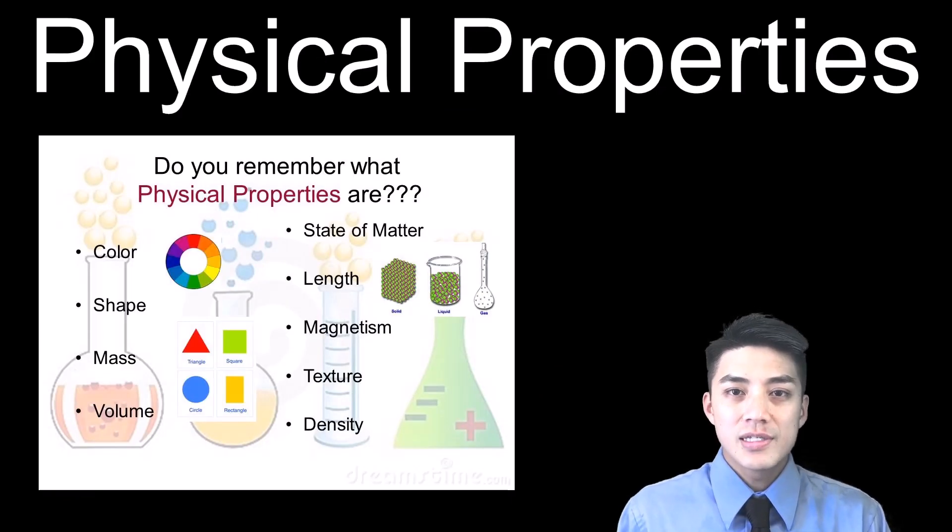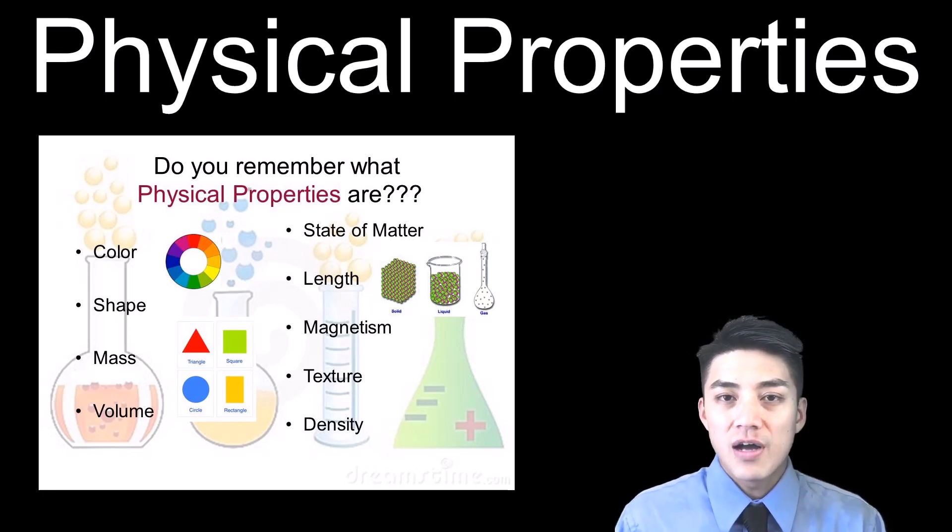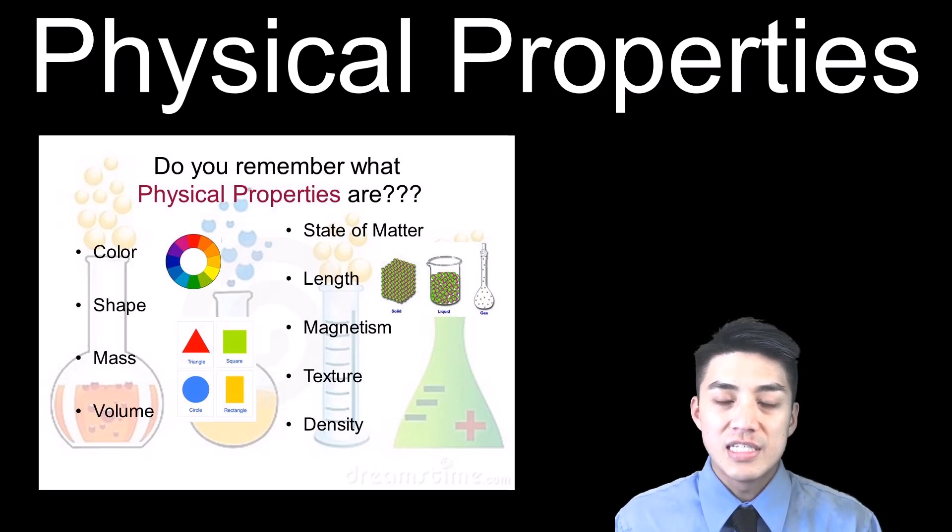So as the name implies, a physical property can be anything that's picked up by your five senses. This might also include taste, odor, density, melting point, so on and so forth.